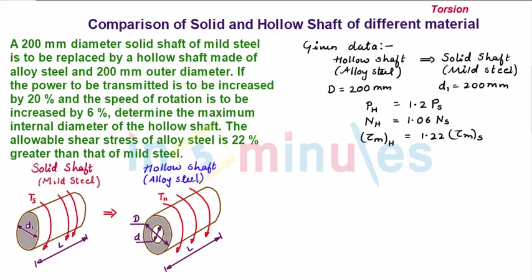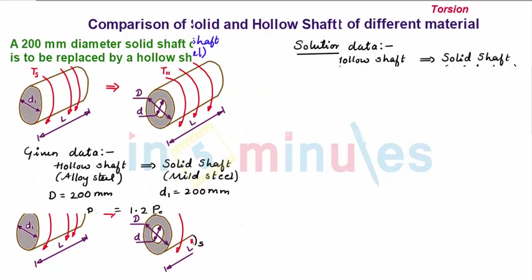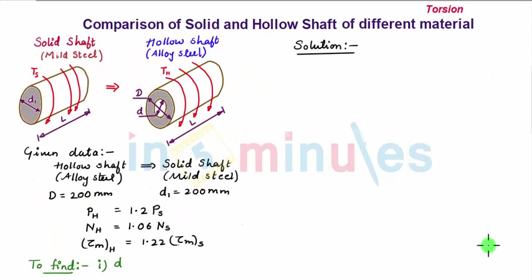We are asked to find the maximum internal diameter d of the hollow shaft. Let's solve the problem. We start with P_H = 1.2 × P_S.